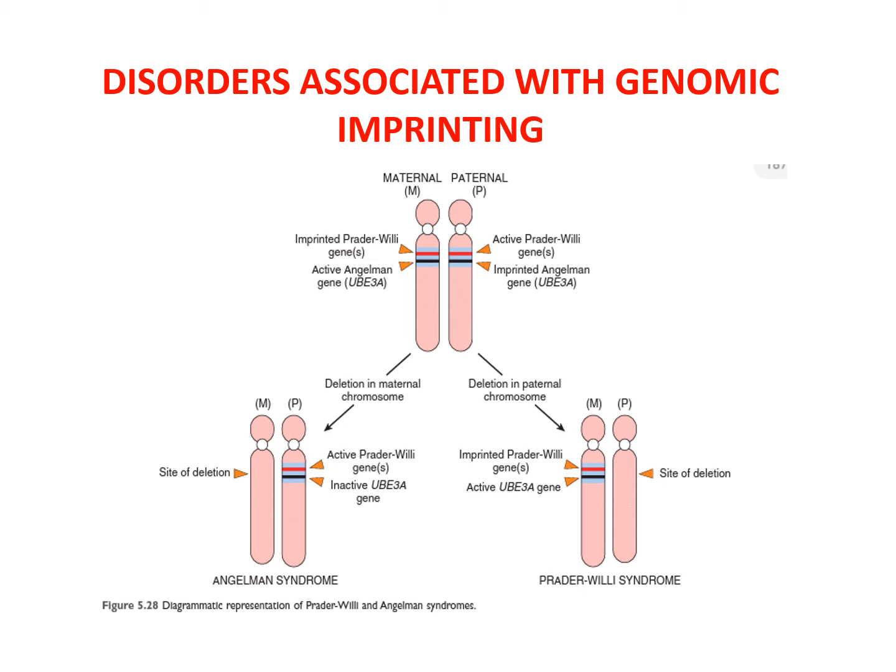In Angelman syndrome, there is deletion of the same region from the maternal chromosome, and genes on the corresponding region of paternal chromosome 15 are imprinted. These patients have intellectual disability, ataxia, seizures, and inappropriate laughter.